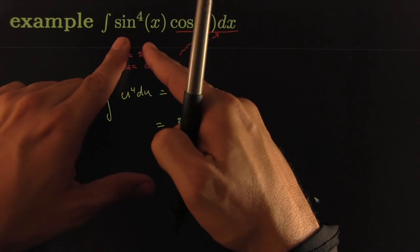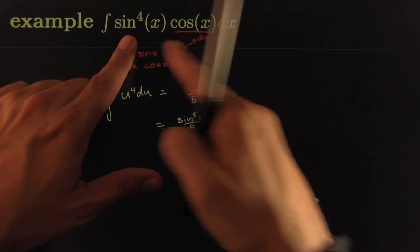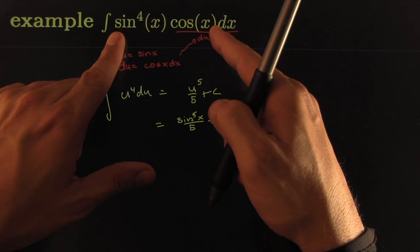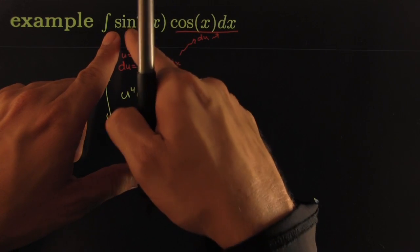But maybe you could take away the idea from here. Every time you've got some sort of function here where its derivative is already here. You should make that function be your u.